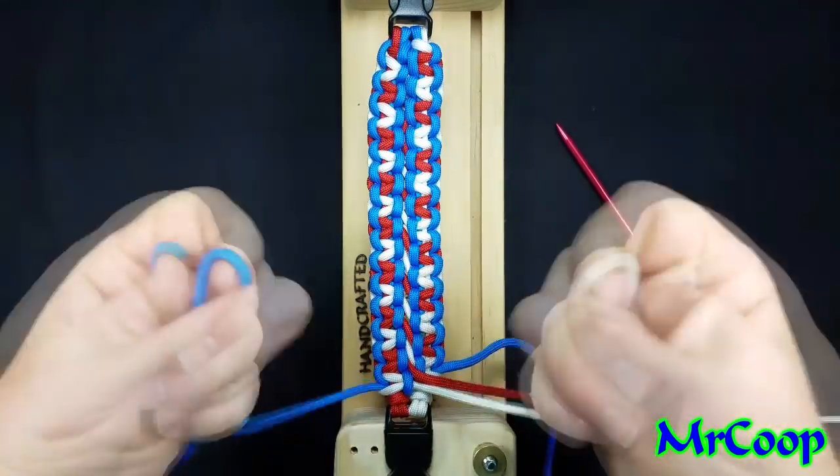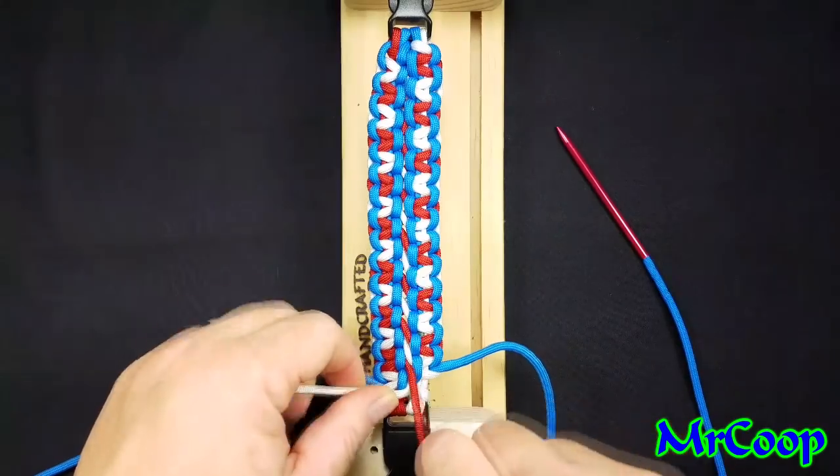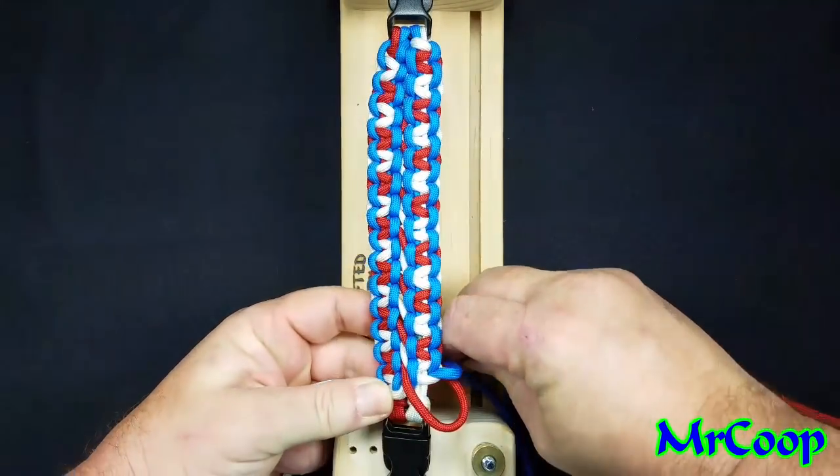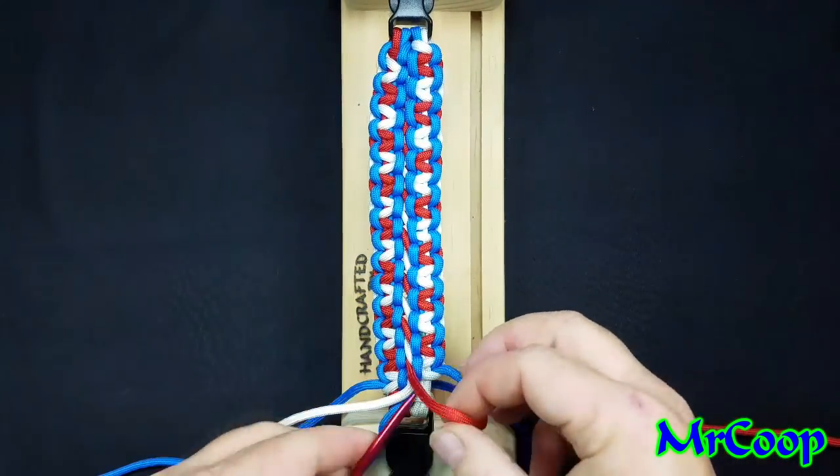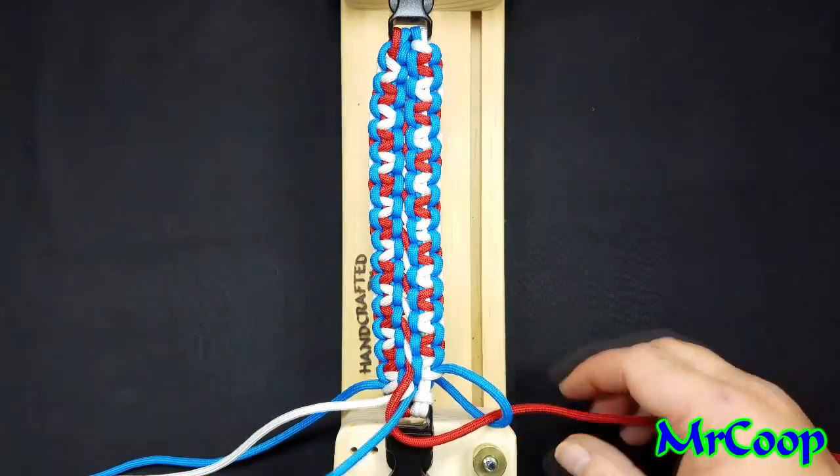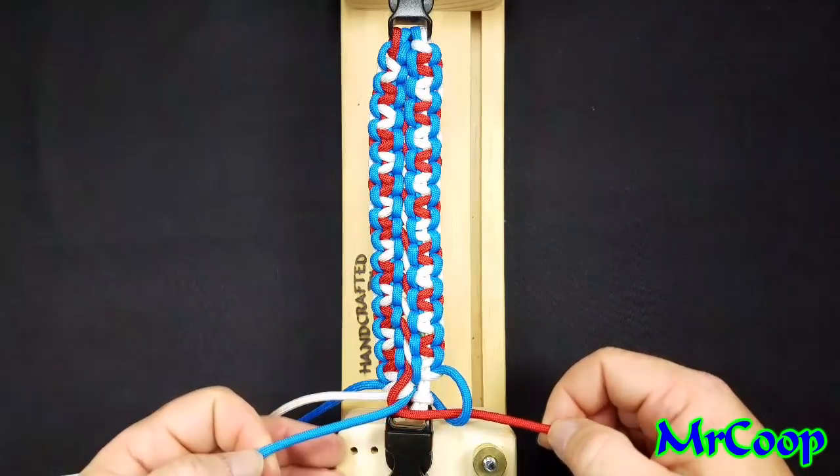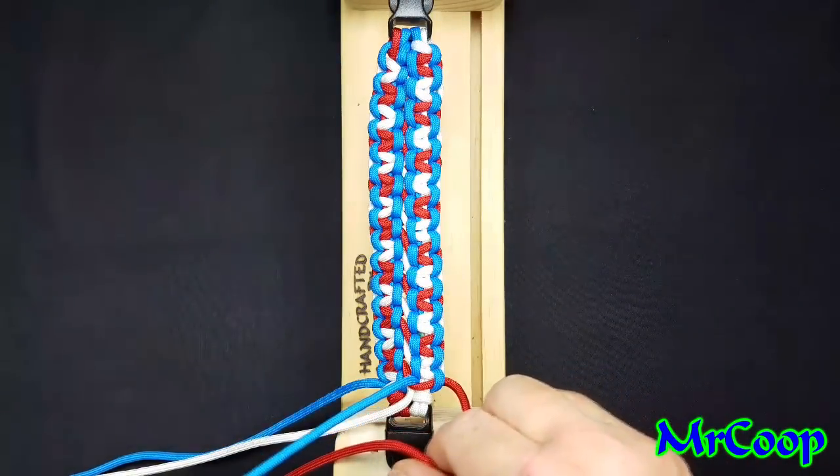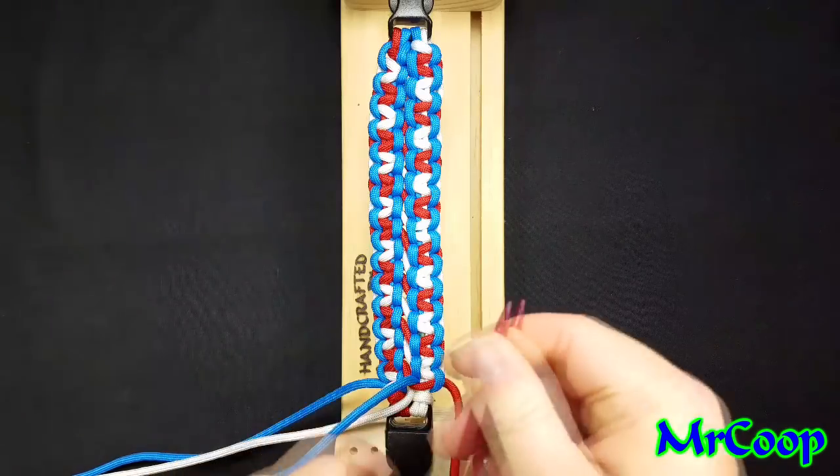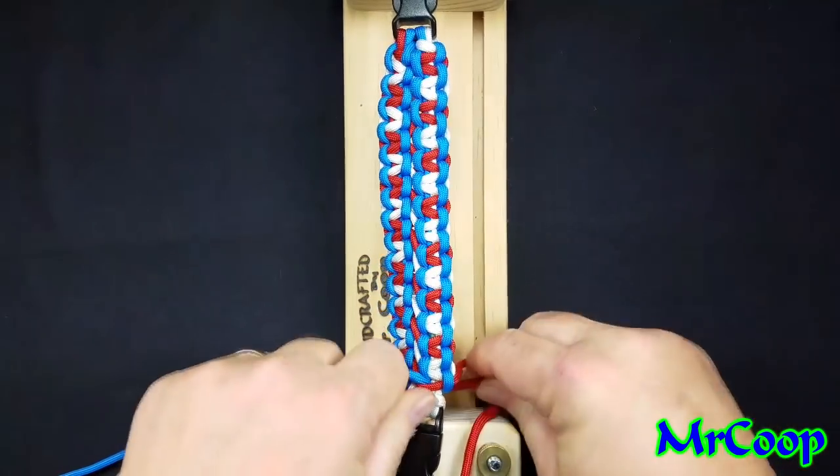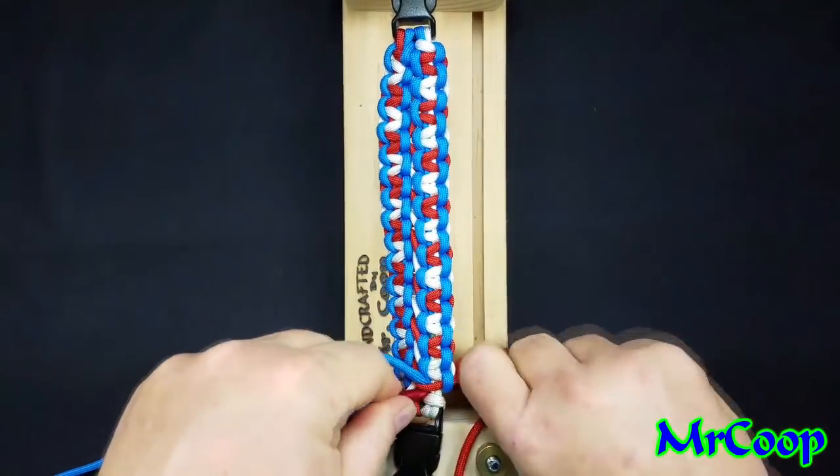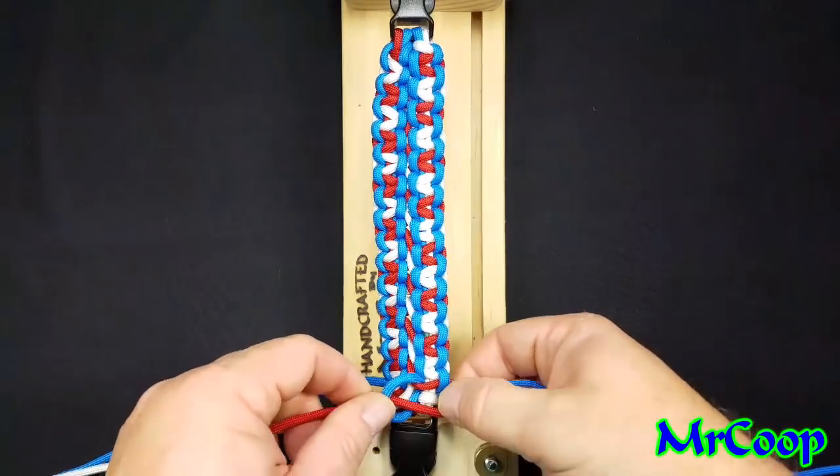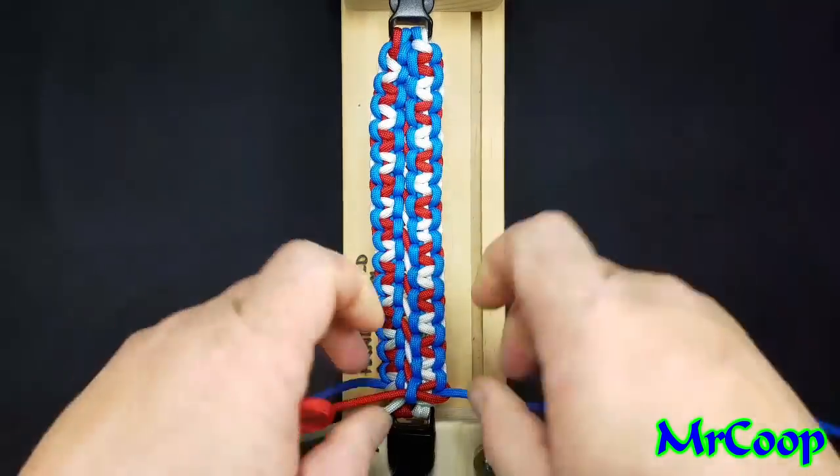And we pull her down as tight as we can. Finish the red off by going over, up through the middle, through the hole. Should look just like that. Pull it down tight. And we do one last one. Take the blue over. Go down through the hole. Come out the other side. Like I said, you don't have to use FIDs. It's just easier for me to get my fat fingers in there. That's what it should look like. And we pull it down tight.